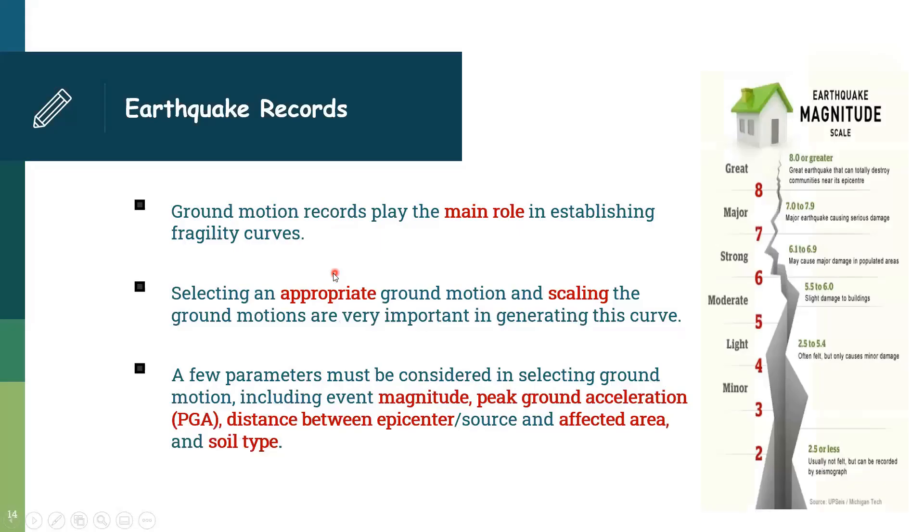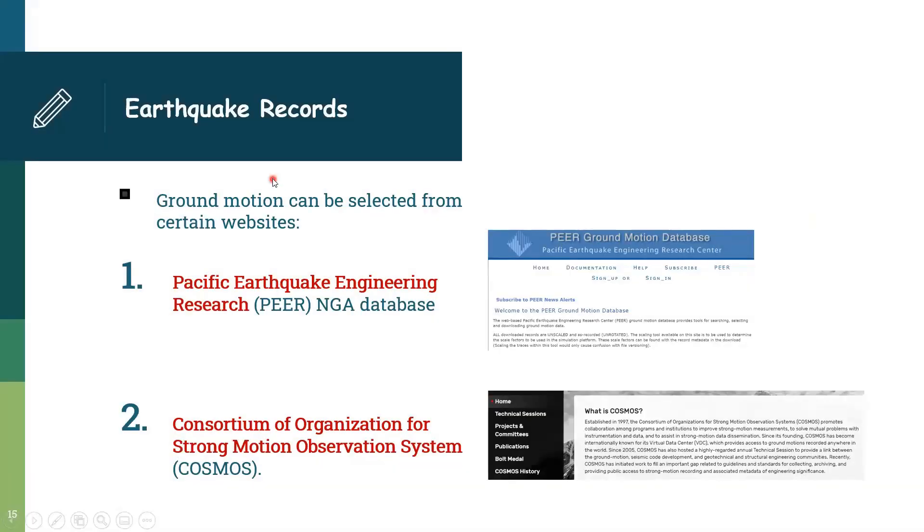So in order to establish this fragility curve we need to select an appropriate ground motion. Ground motion records play the main role in establishing fragility curves. The ground motion has several parameters including magnitude, peak ground acceleration, the epicentral distance, the soil type, and the affected area. The earthquake results can be selected from certain websites: the Pacific Earthquake Engineering Research website or the Cosmos website.